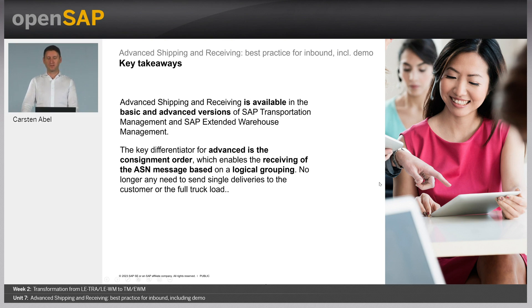What are the key takeaways of this unit? First of all, like in the outbound scenario, advanced shipping and receiving has a basic and advanced license. The main advantage of the advanced license is that we can use the consignment order, which is a new object introduced in TM to reflect the global standards for DESADV EDI communication between supplier and customer. This is a real good new feature we now have with the advanced license. We are now at the end of Unit 7 and also at the end of course Week 2. Thank you for your attention. Next week in course Week 3, we will cover the topic of capabilities of advanced TM and EWM. Goodbye and good luck for the weekly assignment.